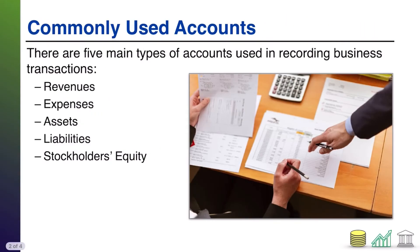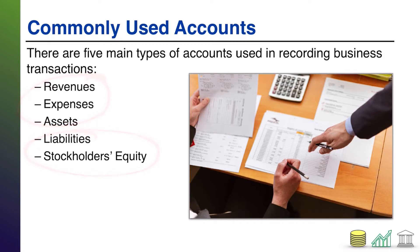To start off with, let's just recap. There are five main types of accounts that companies use for recording business transactions. You see them listed here: revenues, expense, assets, liabilities, stockholders' equity. When we talk about the balance sheet, what we're really talking about is these last three — assets, liabilities, and stockholders' equity. Those are the three types of accounts that will show up on a company's balance sheet.